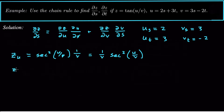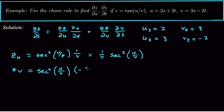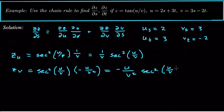Now let's look at the derivative of z with respect to v. Again, differentiating the tangent gives sec²(u/v), and now we multiply by the derivative of the inside with respect to v. A constant over v differentiates to negative the constant — in this case u — over v squared. So ∂z/∂v = (-u/v²) · sec²(u/v).